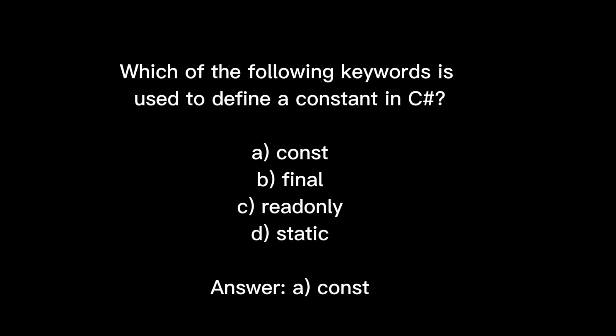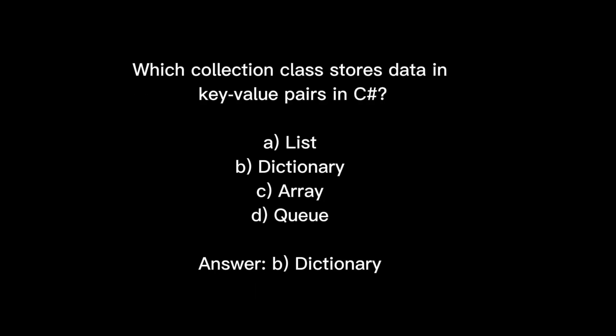Question: Which keyword is used to define a constant in C#? As covered in the theory, 'const' is the keyword used to define a constant value — so option A is correct. Question: Which collection class stores data in key-value pairs in C#? The data structure used for key-value pairs is Dictionary — so option A (Dictionary) is correct.